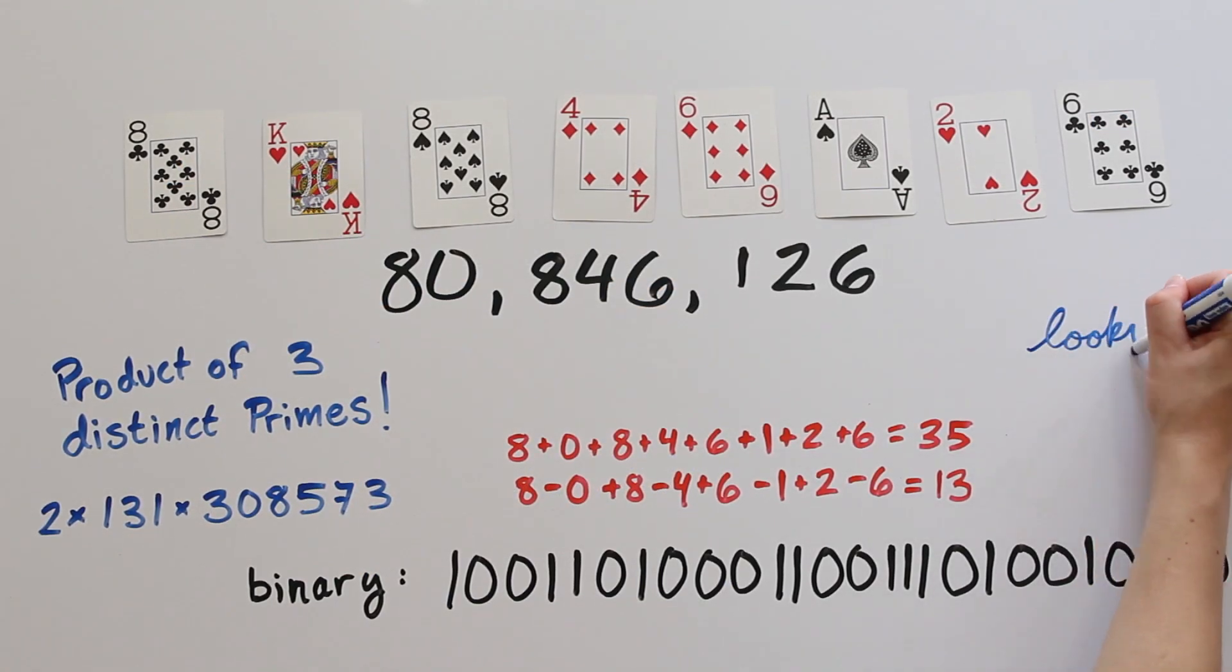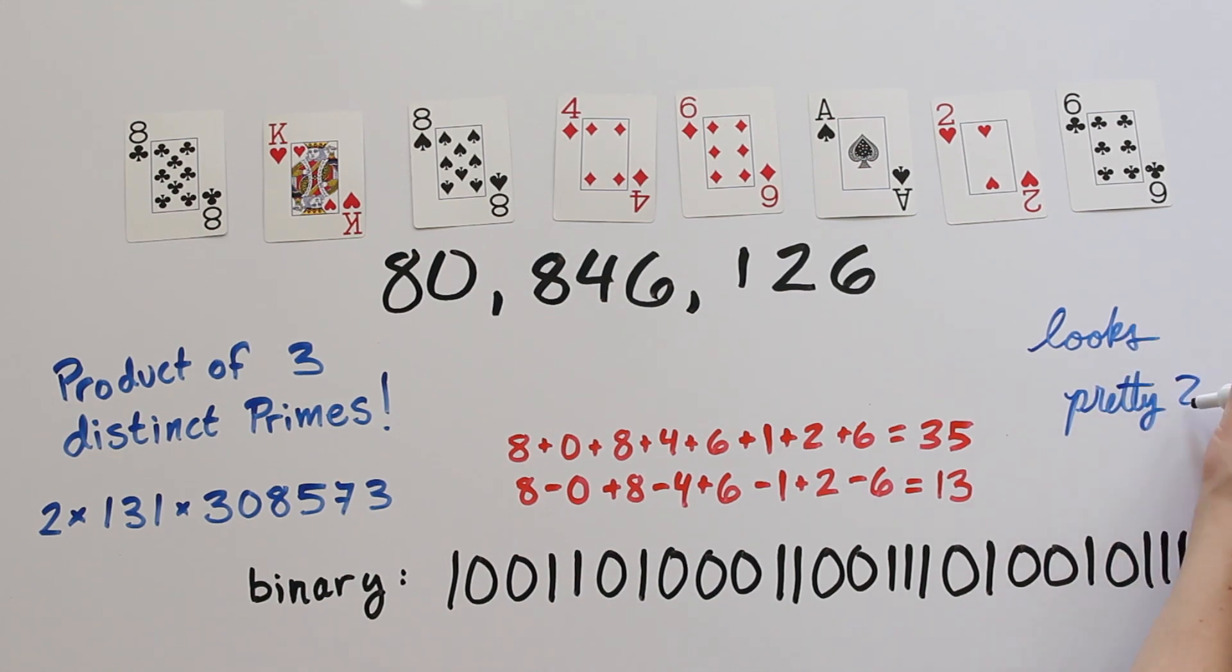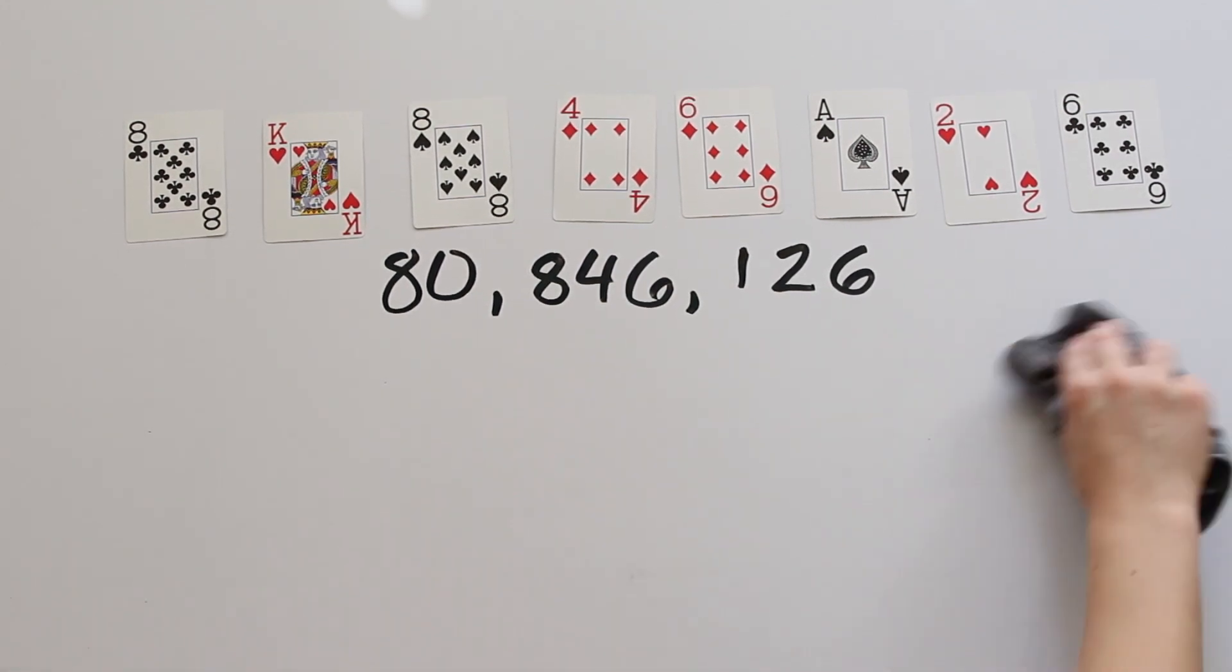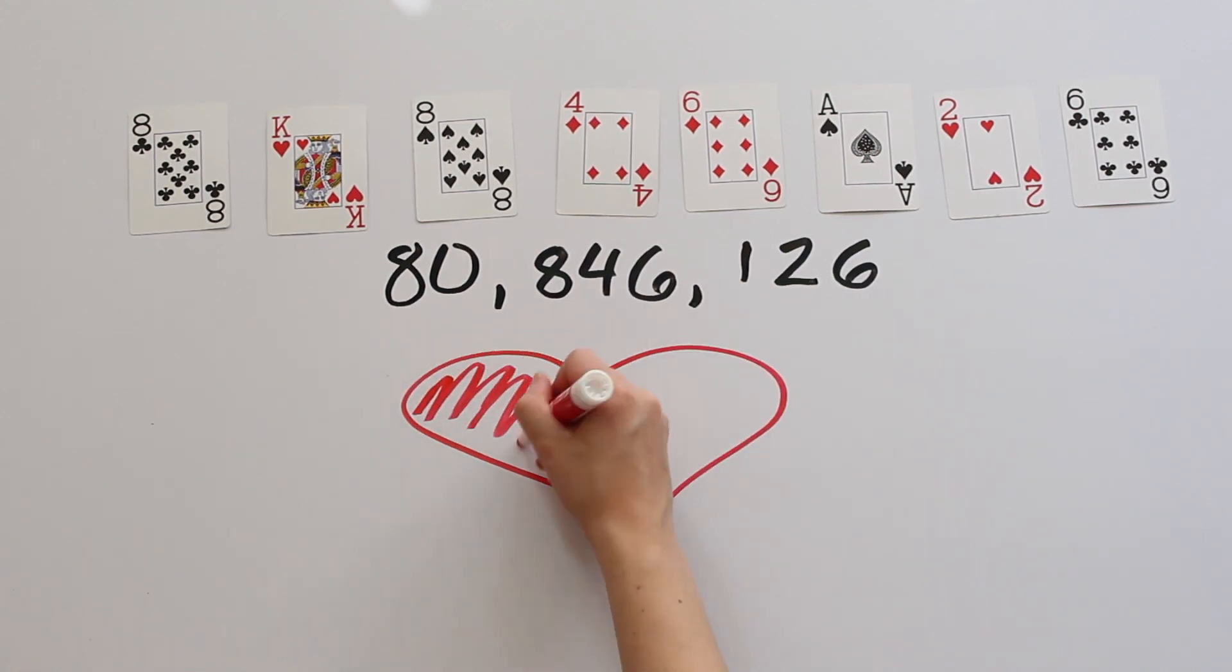I mean, 80,846,126 looks pretty. The numbers have a nice rhythm. Okay, so maybe this isn't the most exciting or interesting number. But that's okay. It's now my favorite.